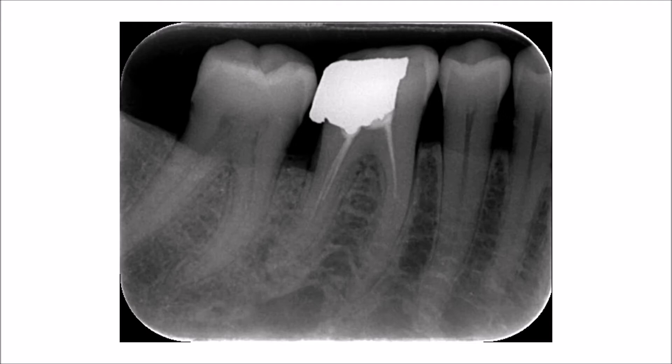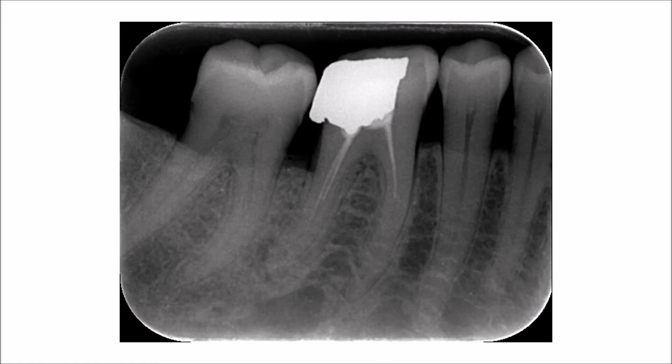As you can see in this periapical radiograph, the bone tends to maintain its parallel relationship with the cemento-enamel junction. You can also see that the overhanging margin has played a role in the initiation and progression of the periodontal bone loss in this area.